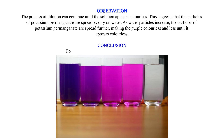Conclusion: Potassium permanganate is made up of tiny particles.